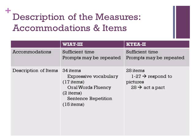For both measures of oral expression, administrators are directed to allow sufficient time for the student to respond, and item prompts may be repeated as needed. The WIAT-3 subtest of oral expression includes 34 items consisting of expressive vocabulary, oral word fluency, and sentence repetition tasks.